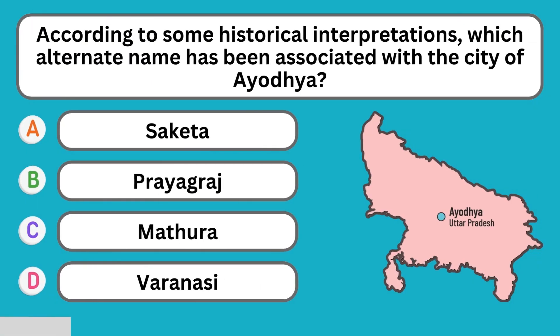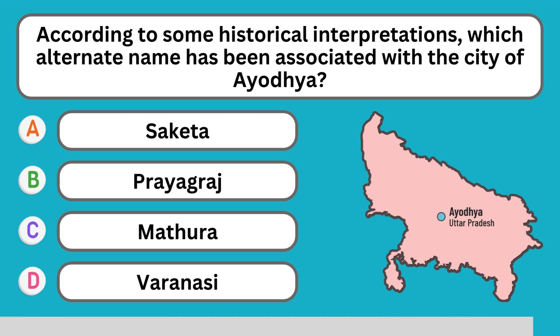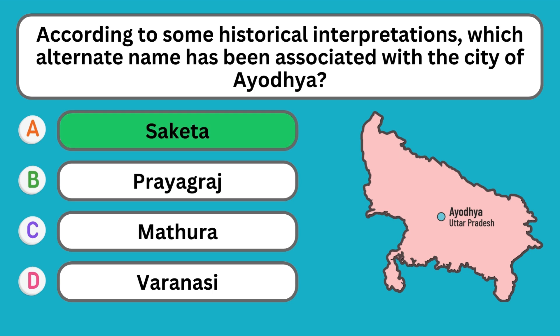According to some historical interpretations, which alternate name has been associated with the city of Ayodhya? Saketa.